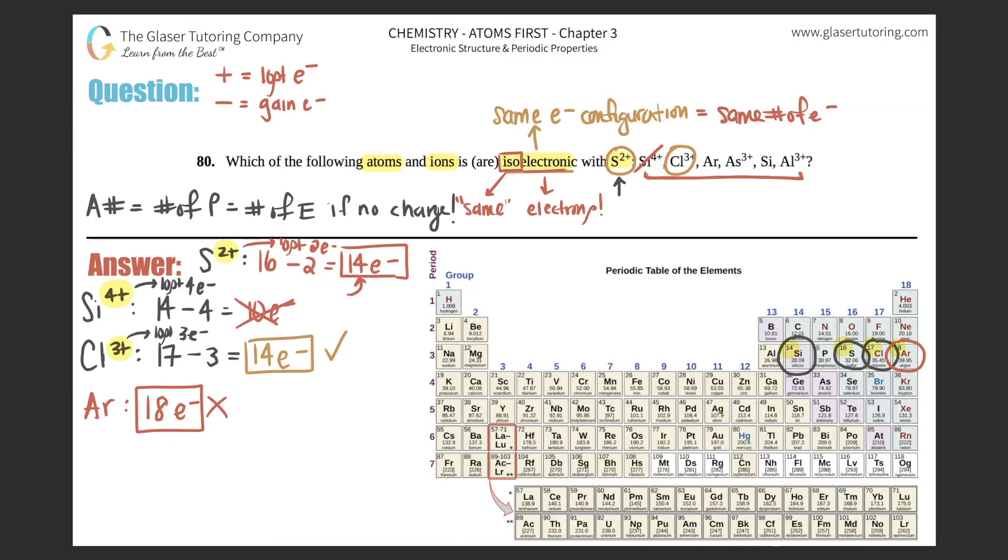Arsenic As3+. Same thing - arsenic is over here, we're starting with 33 electrons. It's a plus 3, so that means you lost 3 electrons, so minus 3. This would get you 30 electrons, but that's nowhere near 14, so this is not isoelectronic.